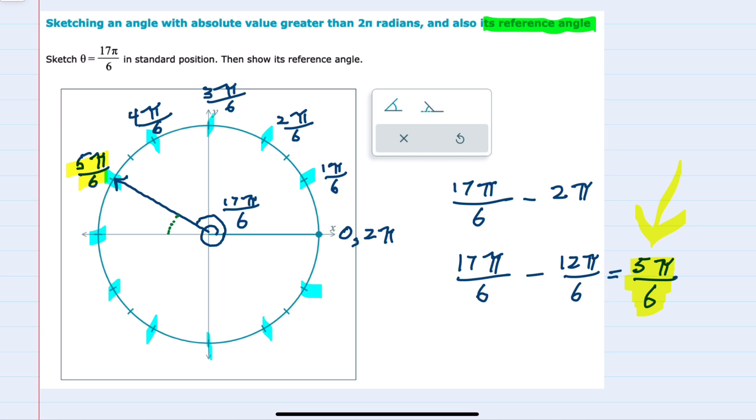If we were trying to find the measure of that angle then I could take this measure which is π radians and subtract 5π/6. So 6π/6 minus 5π/6. I could find the measure of this reference angle is π/6. But again since the reference angle measure wasn't asked for only the sketch, what we have on the graph is just fine.